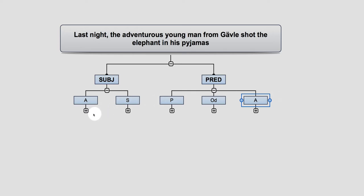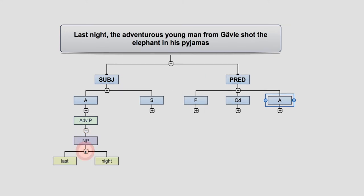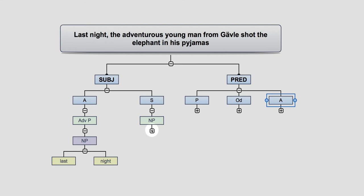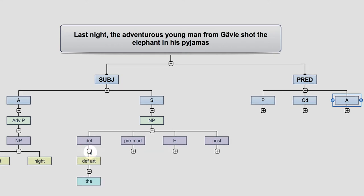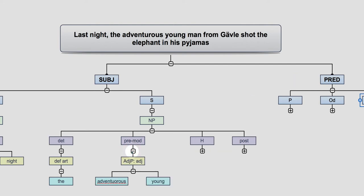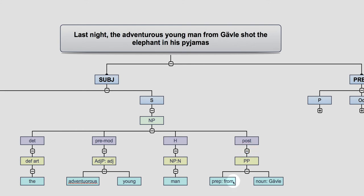Let's take the left hand side to begin with. We've got an adverbial phrase 'last night' — it's a noun phrase functioning as an adverbial. Then we have the subject, which is a noun phrase. It's a longer one, so we break it up into its functions: we have a determiner, an article; the pre-modifier is 'adventurous young' — both adjectives; the head is 'man'; and then we have a post-modifier which is a prepositional phrase, 'from Gävle'.